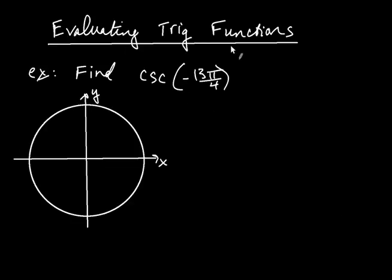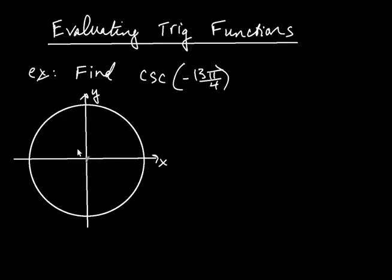Let's talk about evaluating trig functions. Now that we know how the trig functions are defined, let's see how we can make use of those definitions. For example, let's find cosecant of negative 13π over 4. The first thing I notice is that the angle is negative, which means we are rotating in the clockwise direction. We're assuming all angles are measured in radians unless otherwise indicated, so this is negative 13π over 4 radians.